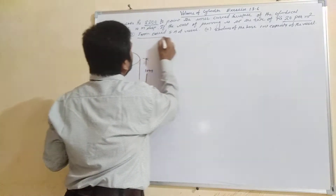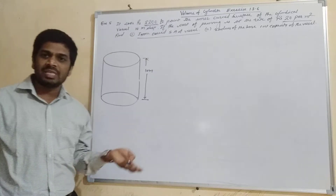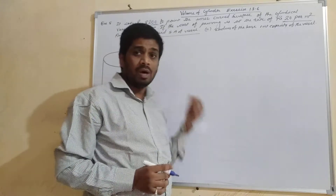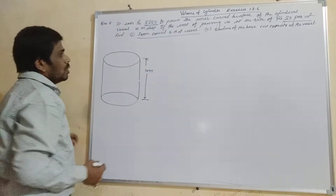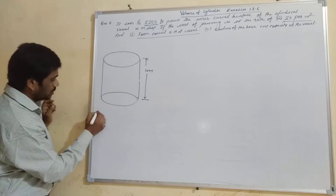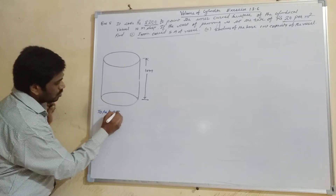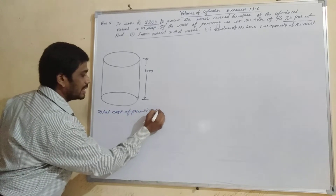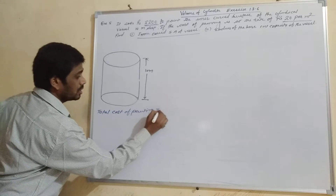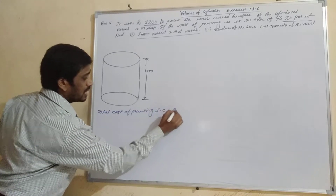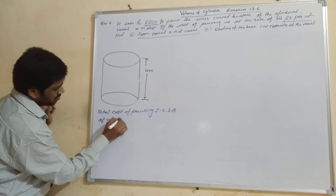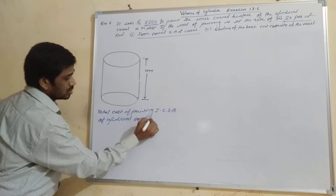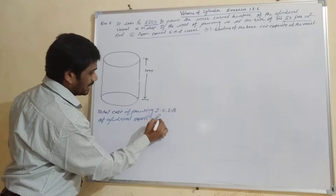We have to find the inner curved surface area of the vessel. It's very simple — we have to divide the total cost by the rate, so we can get the inner curved surface area of the cylindrical vessel. So we will write here what is given: total cost of painting the inner curved surface area of the cylindrical vessel is equal to 20,100 rupees.